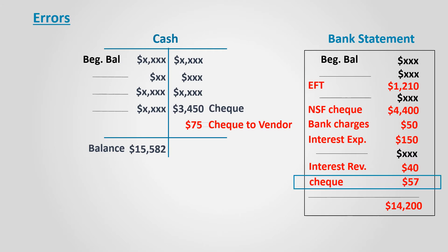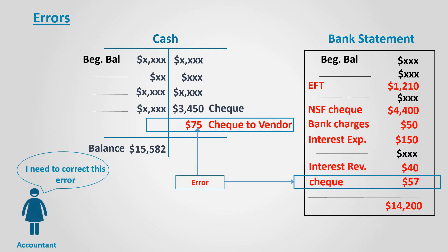Errors could be either on the bank side or the books side. Assuming the error is on the books side, it would be either added or deducted based on the type of error. For example, a check was for $57 but was mistakenly recorded for $75.